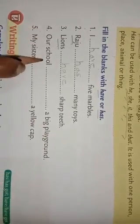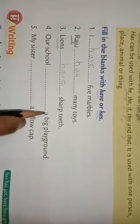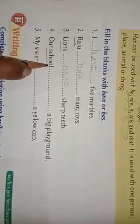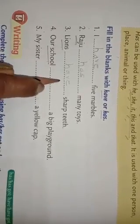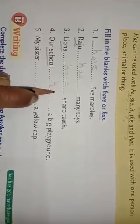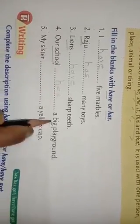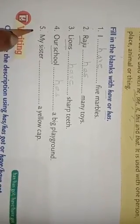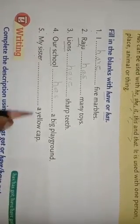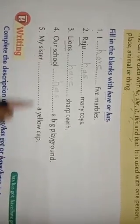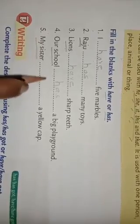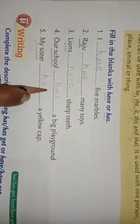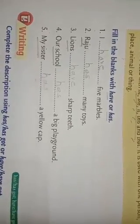Fourth — Our school blank a big playground: school is singular, one place, so we use has — Our school has a big playground. Fifth — My sister blank a yellow cat: my sister is a singular person, so we write has — My sister has a yellow cap.